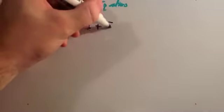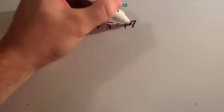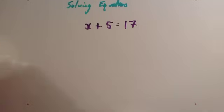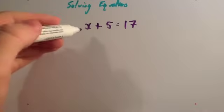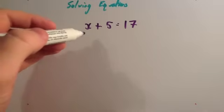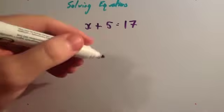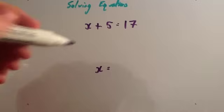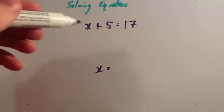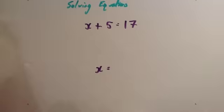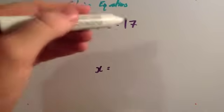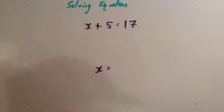x plus 5 equals 17. The method we're going to use is doing the same to both sides. What we want to do is get letters on one side. You want to solve this equation, which means you want to get x equals — find out what number x is. This is quite a simple one; you can see that 12 plus 5 is 17, so the answer is 12.